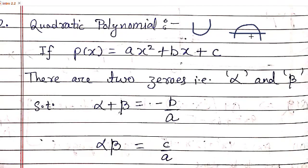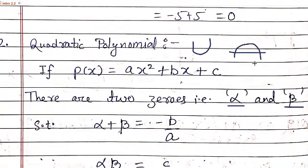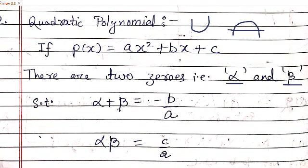Those two zeros can sometimes be the same, but generally they have different values. These zeros are denoted by the Greek symbols alpha and beta. If you put the value of alpha in place of x the whole equation becomes zero, and similarly if you put beta the whole equation becomes zero. Now alpha plus beta is minus b by a, and the new thing here is that alpha into beta is c by a — when we multiply the two roots it is always equal to c by a.